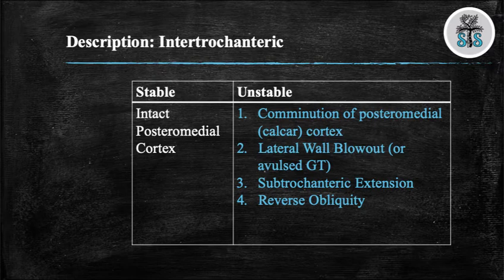The next slide is high yield, as you'll most certainly be asked what four characteristics make an IT fracture unstable. The characteristics are: comminution of the posterior medial calcar, lateral wall blowout, and some will argue an involved greater trochanter, subtrochanteric extension, and reverse obliquity. An unstable IT fracture has at least one of these characteristics.